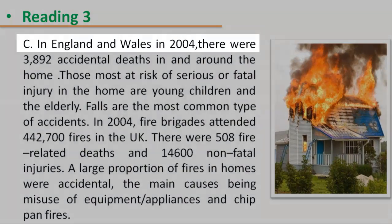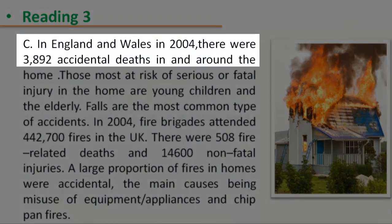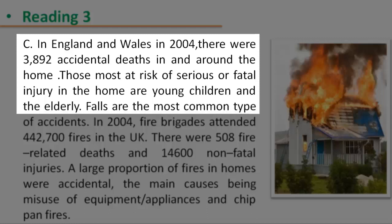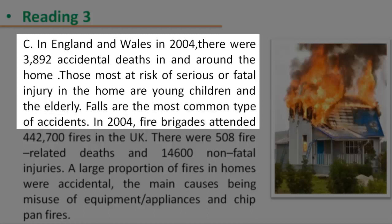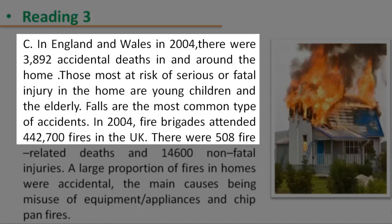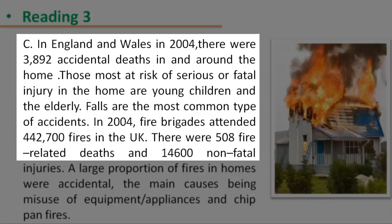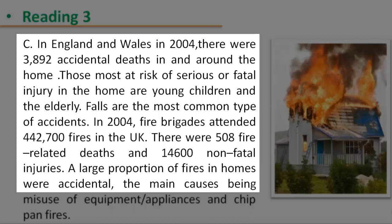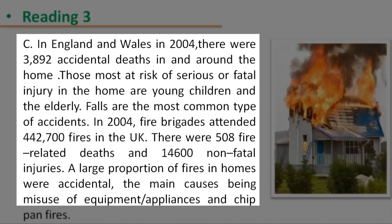In England and Wales in 2004, there were 3,892 accidental deaths in and around the home. Those most at risk of serious or fatal injury in the home are young children and the elderly. Falls are the most common type of accident. In 2004, fire brigades attended 442,700 fires in the UK. There were 508 fire-related deaths and 14,600 non-fatal injuries. A large proportion of fires in homes were accidental, the main causes being misuse of equipment and appliances, and chip pan fires.